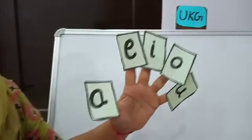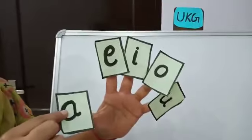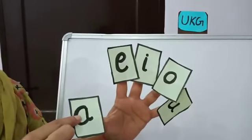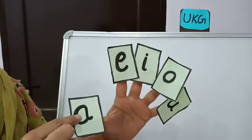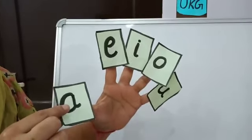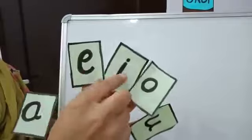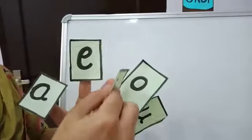Earlier we had done the A vowel letter, A vowel words, and A vowel story. Today we will start E vowel.